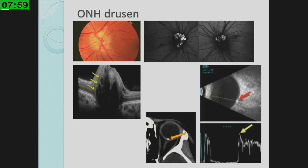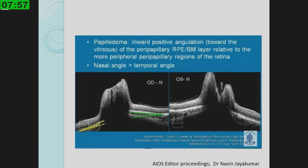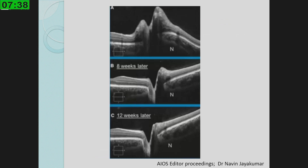OCT is also an accessory tool for the ophthalmologist. If you are still suspecting — is this pseudo disc edema or papilledema? — take a section of the optic nerve head and look at the RPE-Bruch's membrane. The nasal angle of the RPE-Bruch's membrane will show an inward tilt towards the vitreous that will be greater than the temporal angle. You can see an upward tilt in the initial image that straightens out as the disc edema subsides.